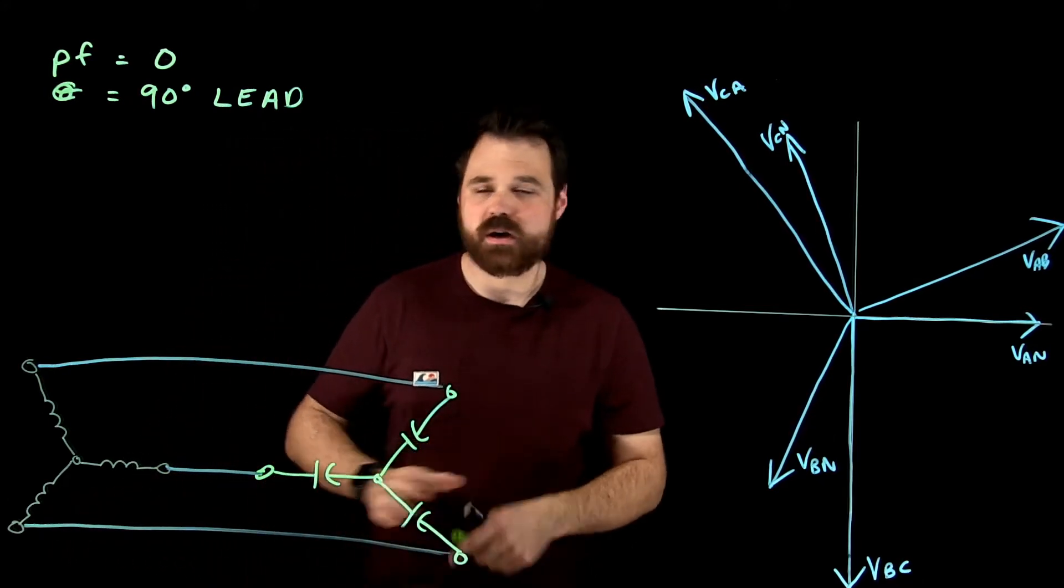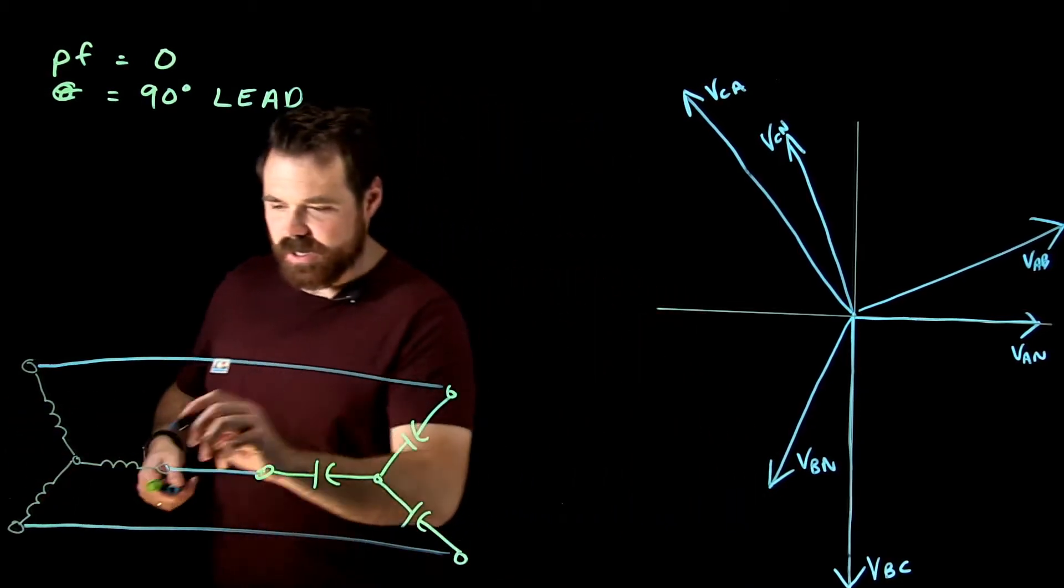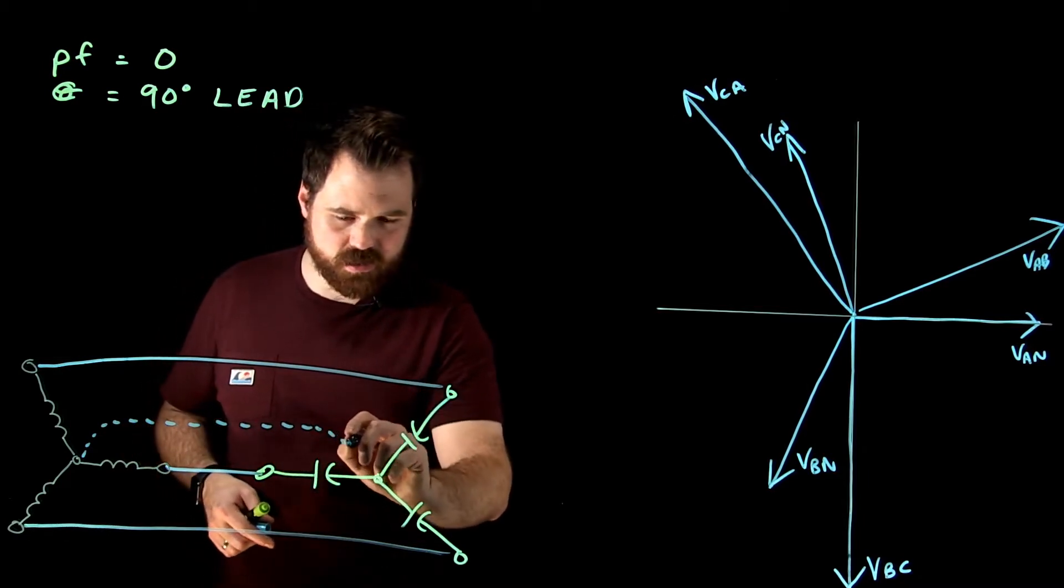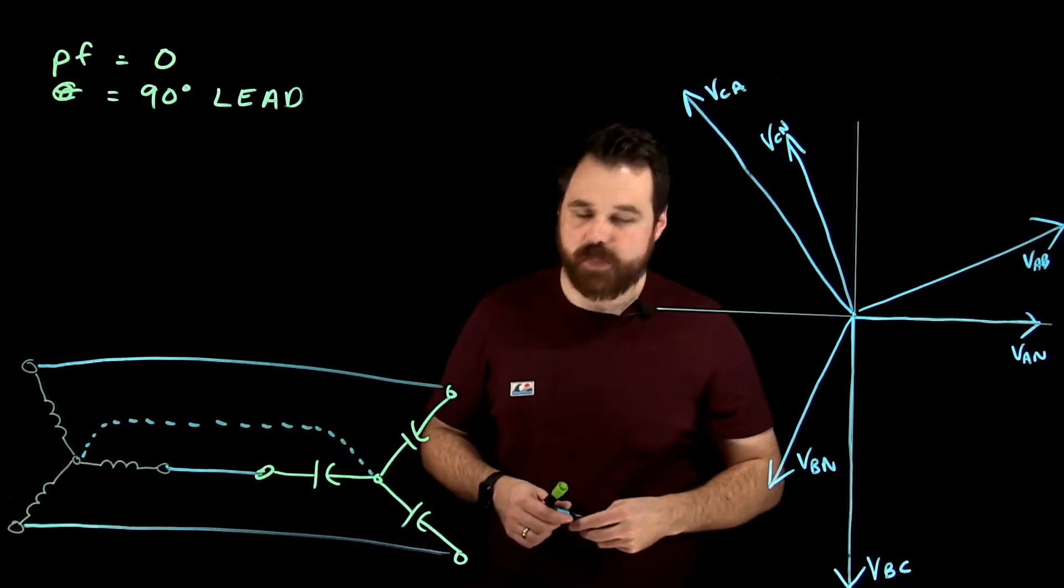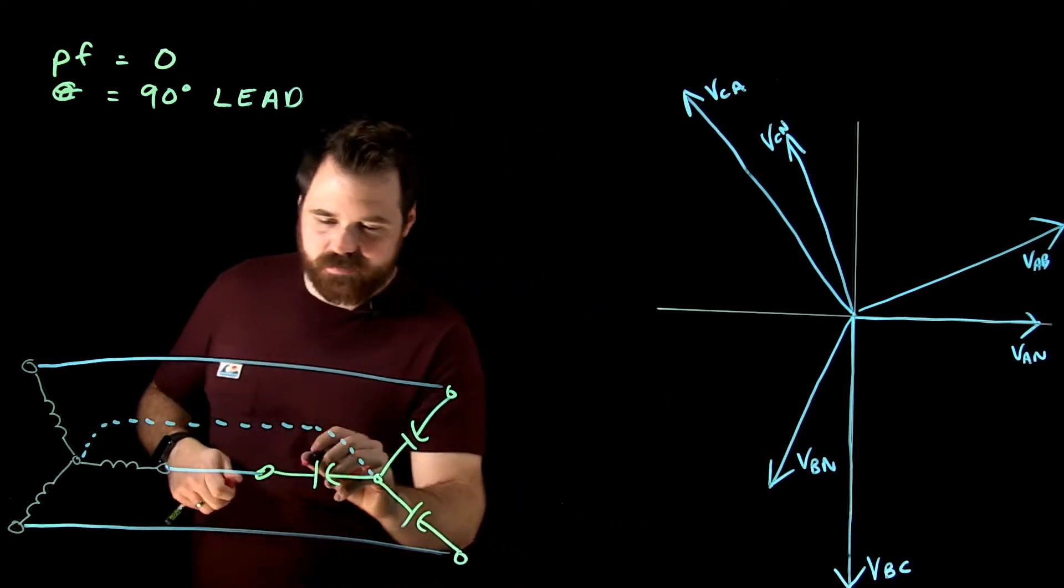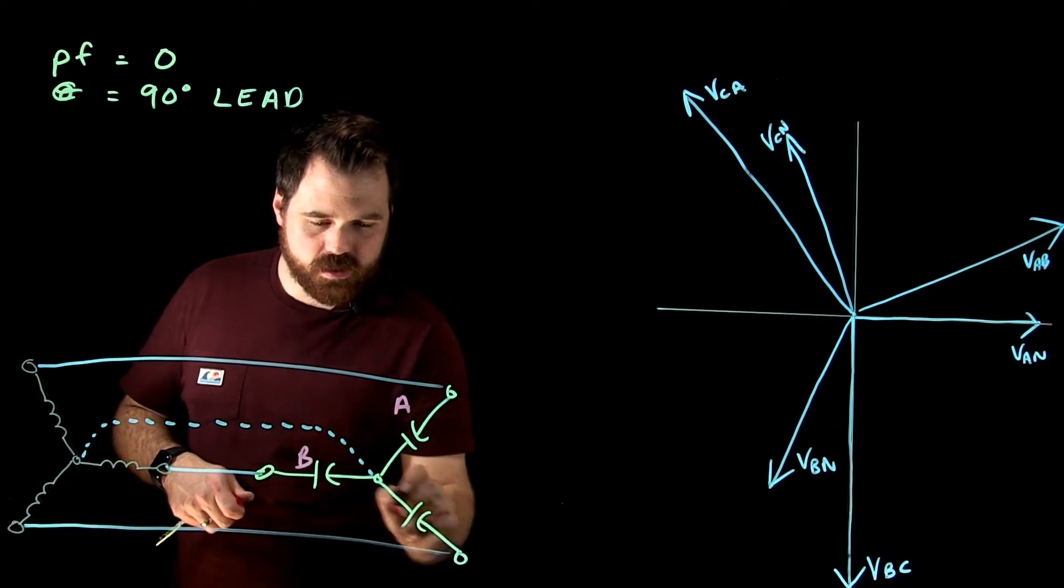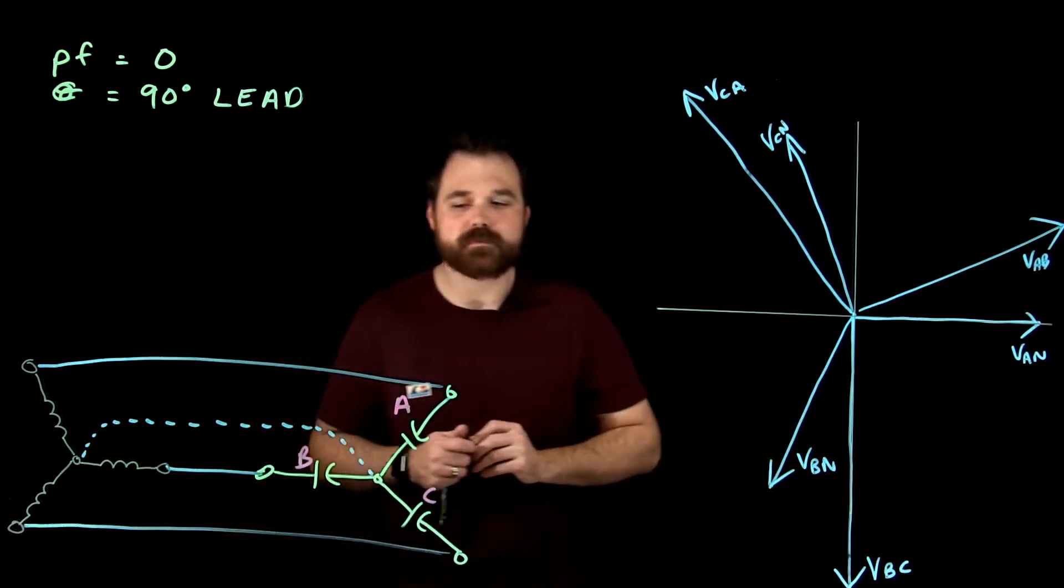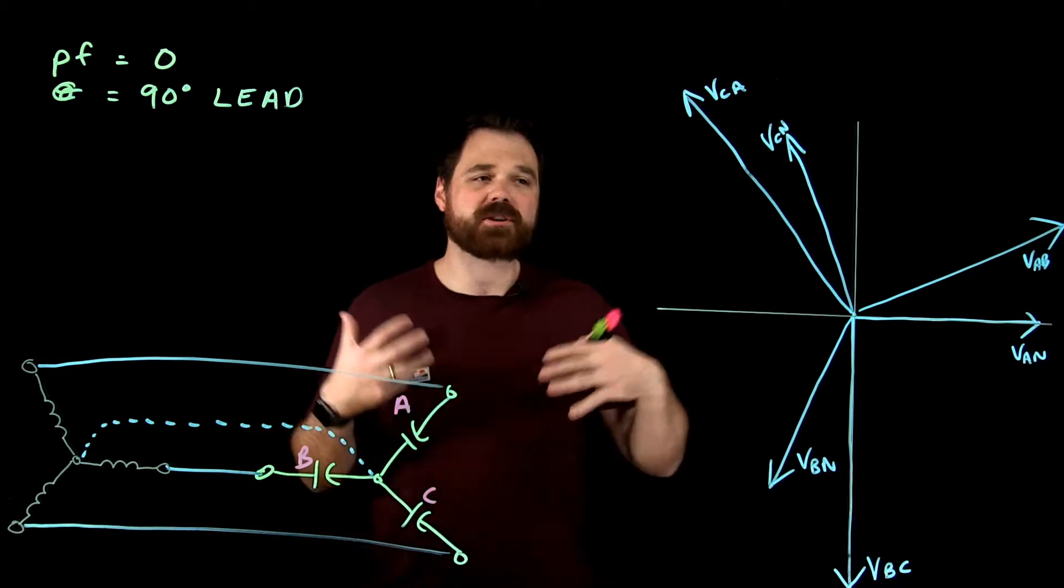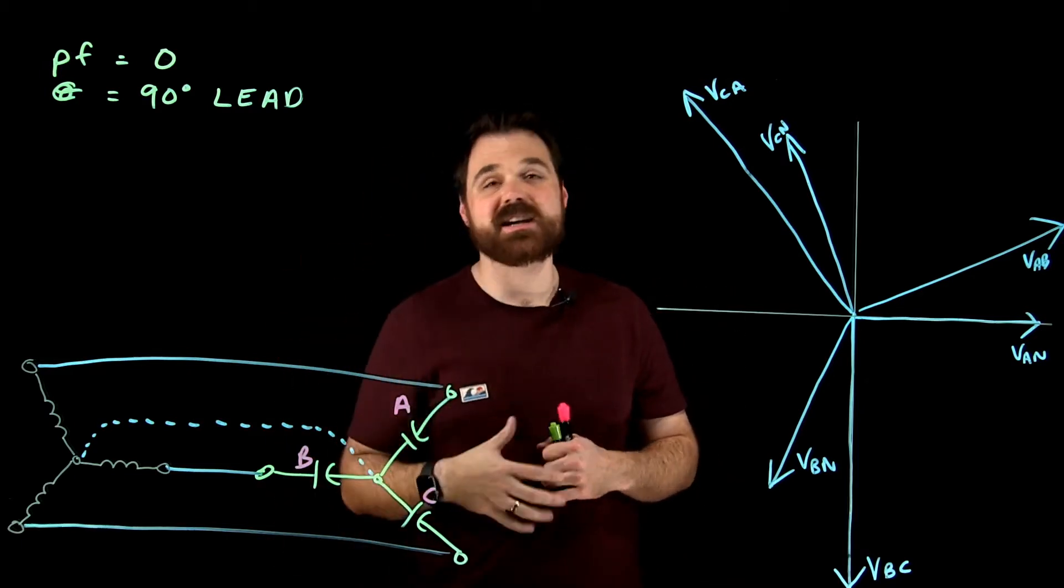So over here, I have my Y source. Here I have my Y load, connect them all up. And then there's a neutral conductor as well, which we'll talk about at the end. So in this case, let's call this phase A, phase B, and phase C. And let's talk about the relationship. Now, when we're discussing relationships, it's important to start with talking about each phase individually.